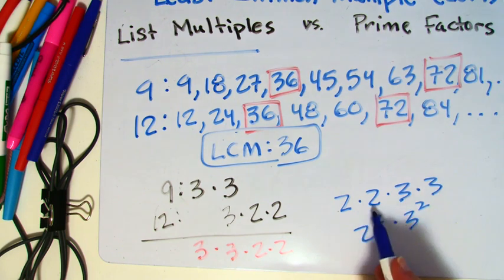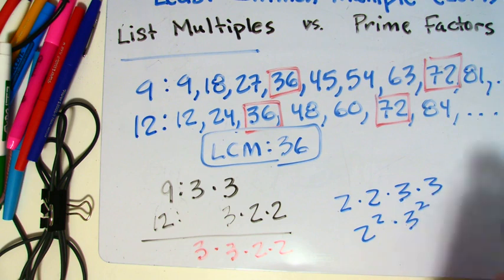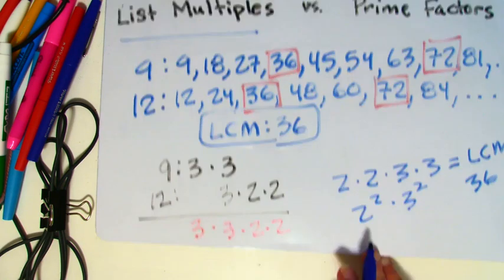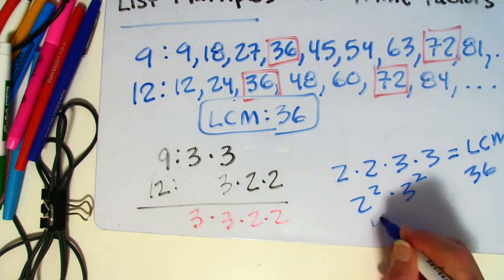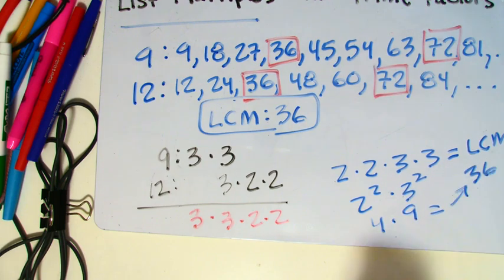Now, 2 times 2 is 4. 4 times 3 is 12. And 12 times 3 is 36. So, again, my lowest common multiple is 36. And if I figured it out in this exponential form, that's going to be 4 times 9, which, again, is 36.